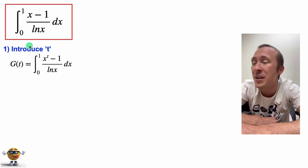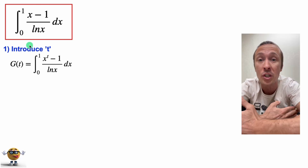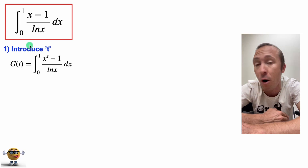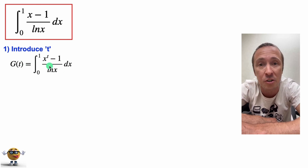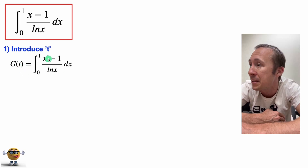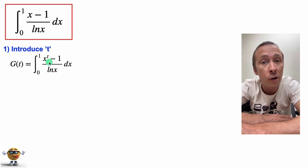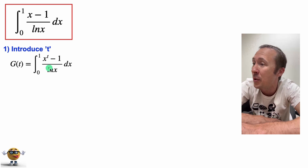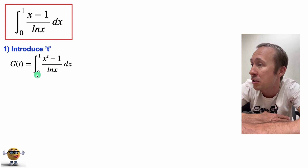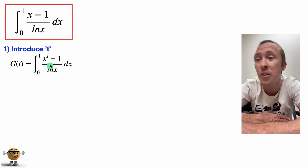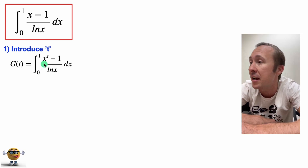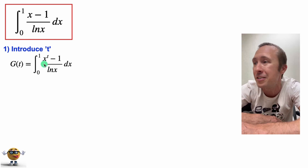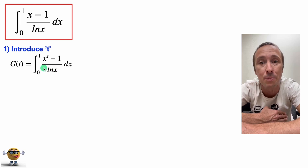The first thing we're going to do is introduce a parameter, which is part of this technique. We introduce a variable other than what we're integrating — in this case we're going to call it t — and we're going to put t right here in the exponent of x. Where you put t depends on the type of integral, and sometimes it's a bit of trial and error to get the parameter in the right spot.